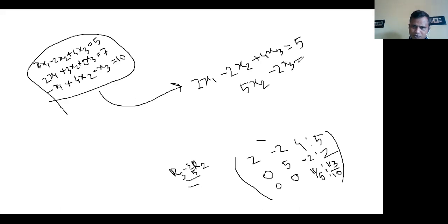2 equals to 2. Last one is 11 by 5 x3, that is equals to 113 divided by 10.